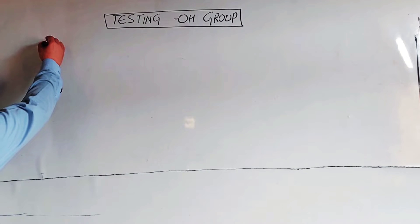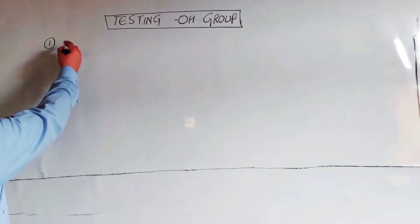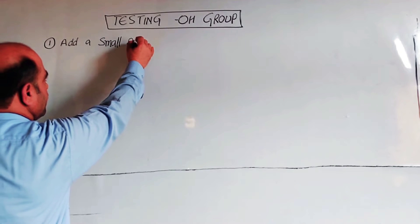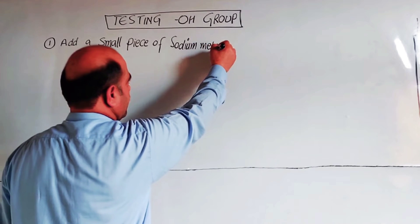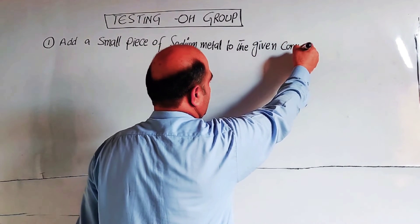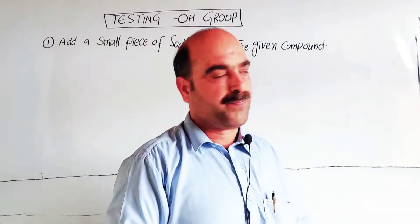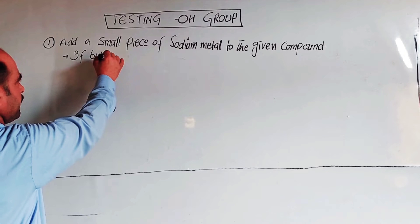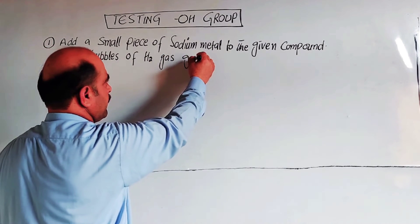The first test is the sodium metal test. Add a small piece of sodium metal to the given compound. If bubbles of hydrogen gas are given off, then the hydroxyl group is present.